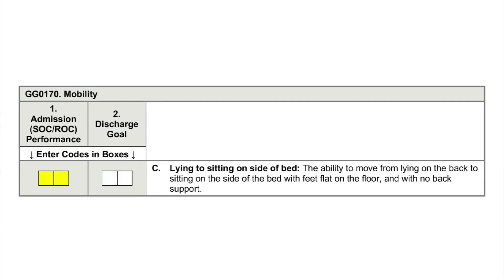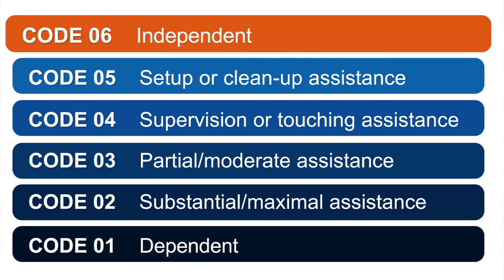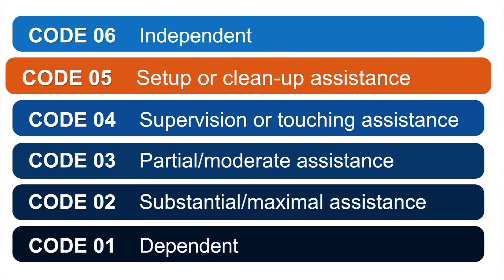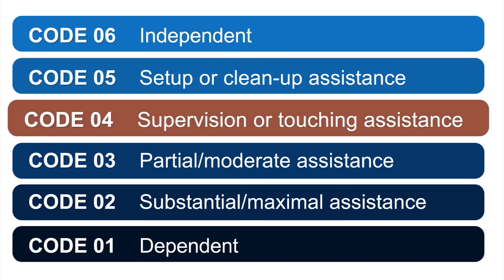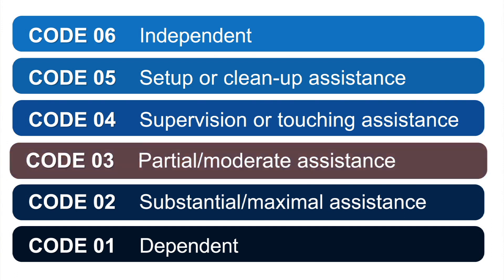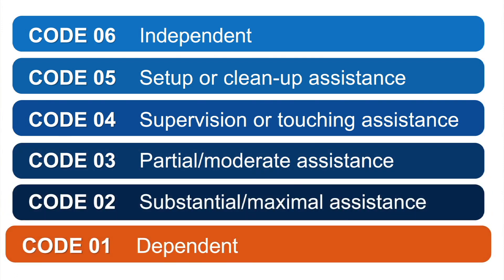How would you code Mrs. Brown's admission or start of care performance for GG0170C lying to sitting on side of bed? Code 06, independent. Code 05, setup or cleanup assistance. Code 04, supervision or touching assistance. Code 03, partial, moderate assistance. Code 02, substantial, maximal assistance. Or Code 01, dependent.